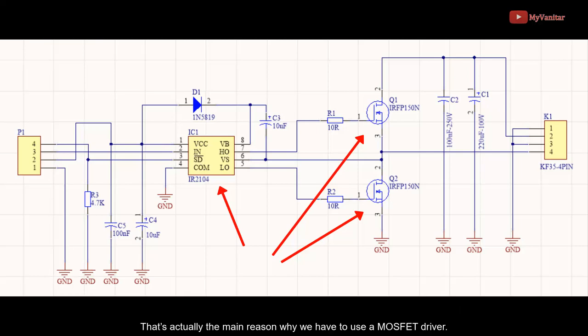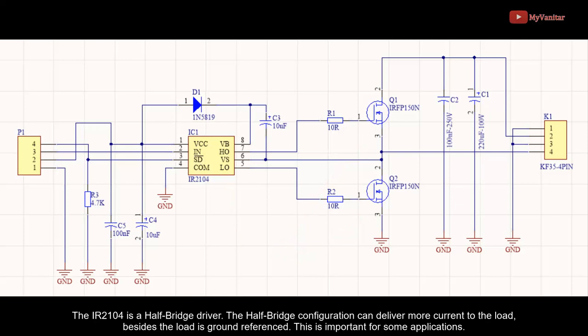That's actually the main reason why we have to use a MOSFET driver. The IR2104 is a half-bridge driver. The half-bridge configuration can deliver more current to the load, besides the load is ground referenced, which is important for some applications.